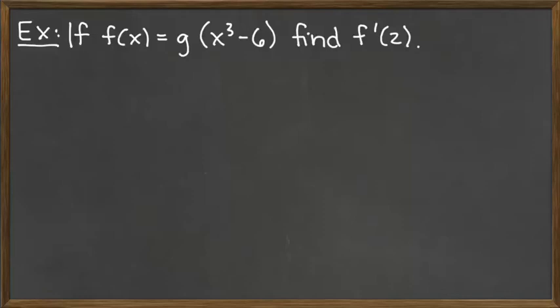To complete this somewhat abstract example, we really have to follow two steps. We're given f of x is equal to g of some other function x cubed minus 6, and we're asked to find f prime of 2.